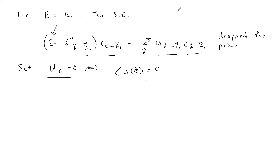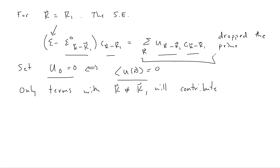What this allows us to say is that only terms with K not equal to K1 will contribute in the sum. Because they are multiplied by these coefficients, we expect them to be small since they are zero in the unperturbed case. In the unperturbed case the energy equals the unperturbed value, and only C(k minus K1) is nonzero — corresponding to a free electron wave function at that particular wave vector.